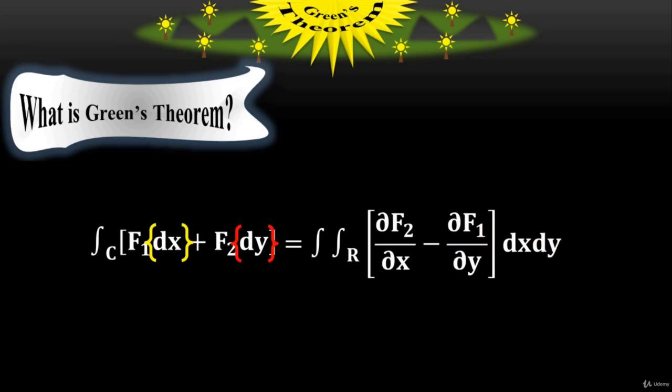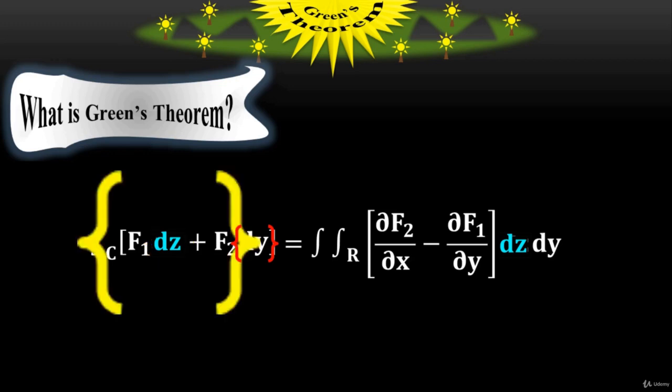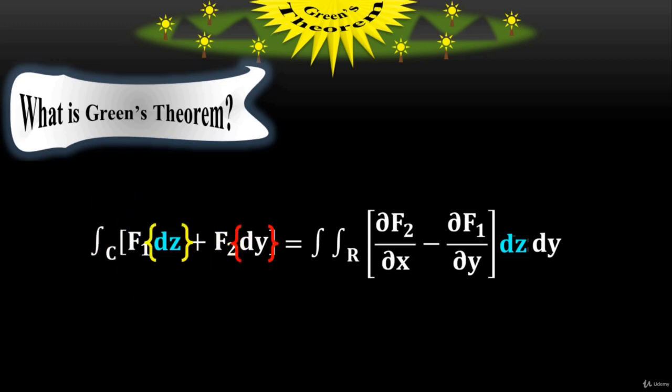In the case where I have f sub 1 with dz, you must put dz on the right side as well. So here, f sub 1 is with respect to z, but on the right side, f sub 2 is with respect to z. Similarly, f sub 2 is with respect to y, but on the right side, f sub 1 is with respect to y.